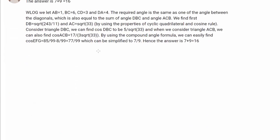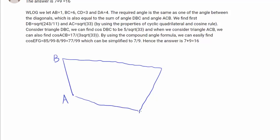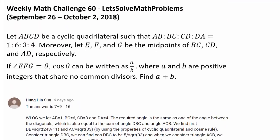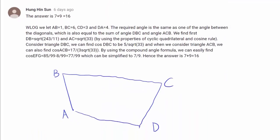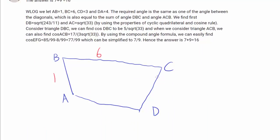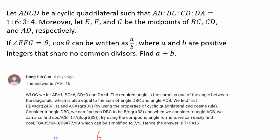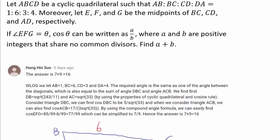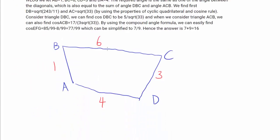So we have a cyclic quadrilateral — let's call this A, B, then CD. We know the ratio of the side lengths is 1, 6, 3, and 4. And we also know that E, F, and G are midpoints of BC, CD, and AD, so we can mark E, F, and finally G on the diagram.